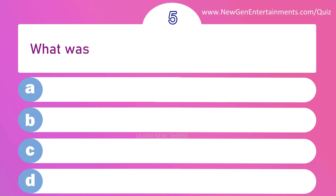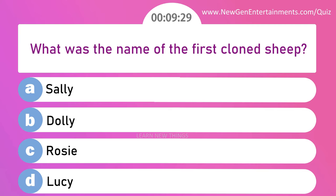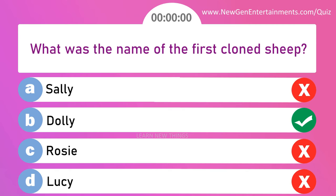What was the name of the first cloned sheep? Options are: A) Sally, B) Dolly, C) Rosie, and D) Lucy. Answer is option B: Dolly.